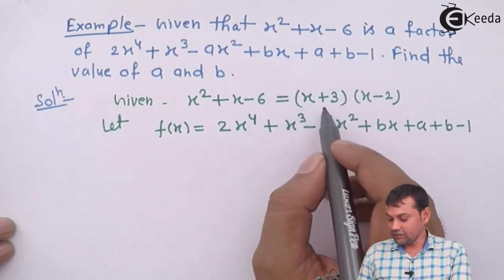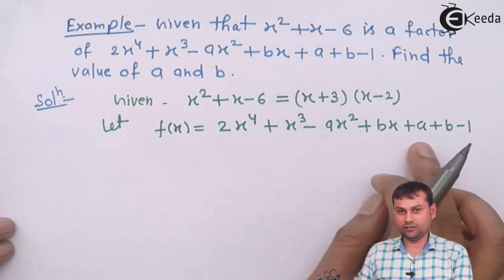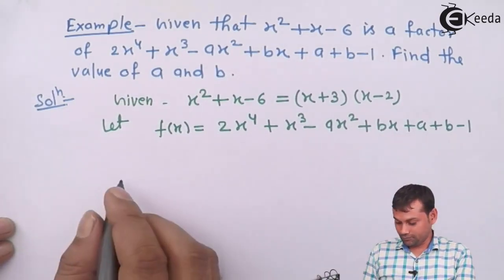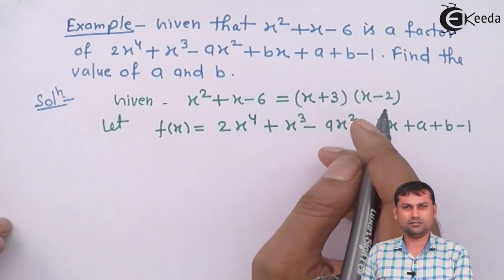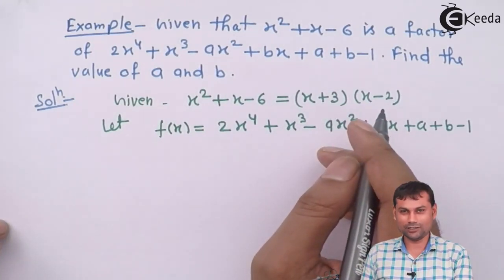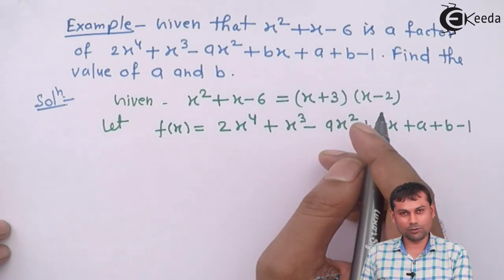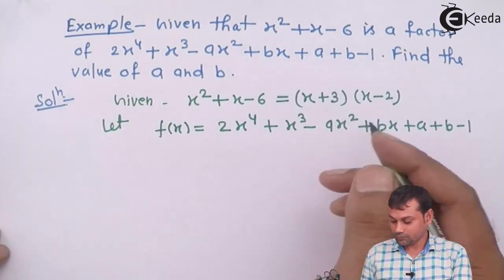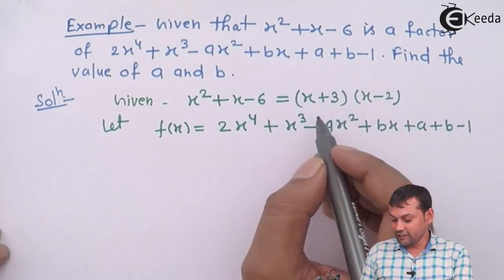That is (x+3)(x-2). Let f(x) equals to 2x⁴ + x³ - ax² + bx + a + b - 1. Since x+3 and x-2 is the one factor of this expression, after comparing with the linear factor, it will be x+3 and x-2.